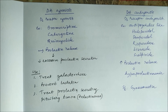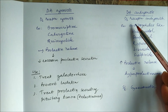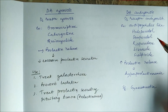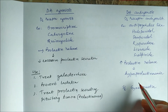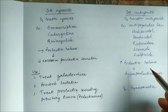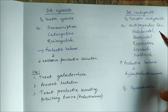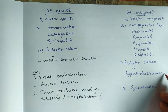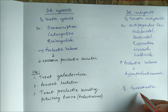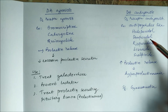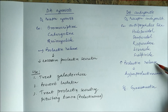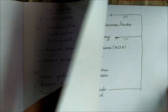Dopamine antagonists — D2 receptor antagonists — include antipsychotic drugs such as haloperidol, droperidol, and risperidone. These increase prolactin release and cause hyperprolactinemia, which is a side effect of all these antipsychotic drugs. Hyperprolactinemia leads to breast development in males, a condition called gynecomastia. So gynecomastia as a side effect of antipsychotics occurs because they increase prolactin release and produce hyperprolactinemia.